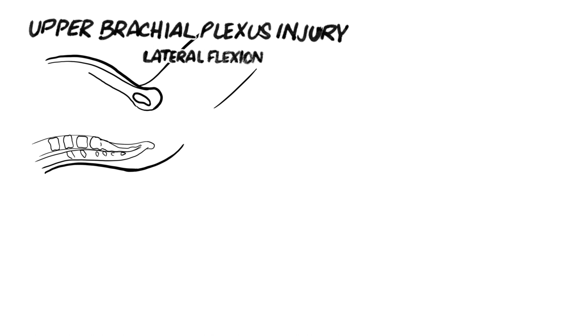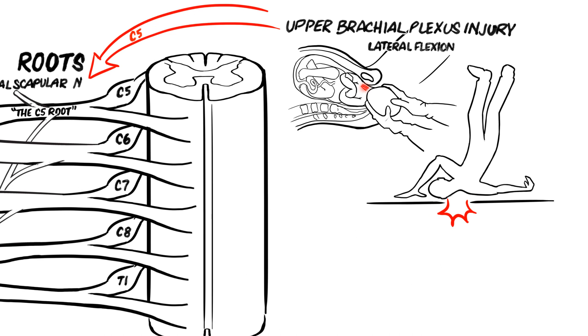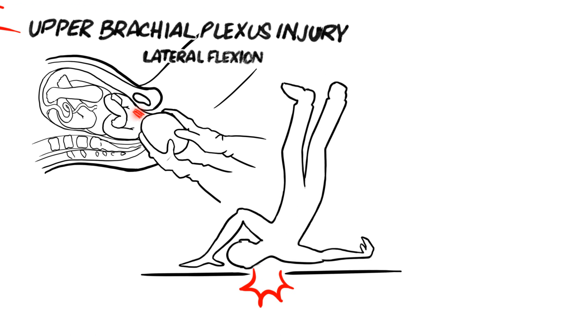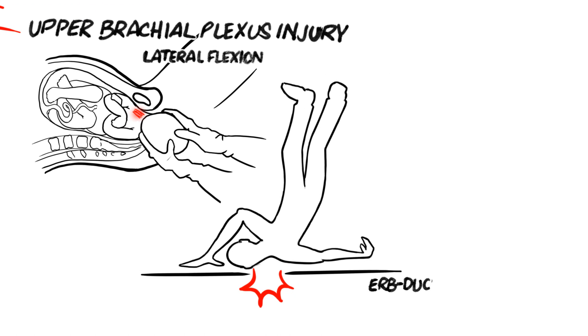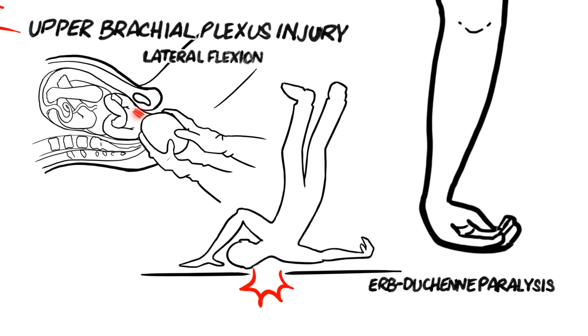Upper brachial plexus injury occurs during extreme or violent lateral flexion of the head, especially if the shoulder is simultaneously depressed. This is typified by a difficult delivery in which the baby's head is pulled out of the birth canal while his shoulders are trapped within the mother's pelvis. Upper brachial plexus injuries can also occur in adults when an oblique force pushes the head and shoulder in opposite directions, such as might occur during a fall from a motorcycle. Such injuries put enormous stretch on the C5 and C6 nerve roots and or the upper trunk itself. Damage to these structures results in characteristic deficits known as Erb-Duchenne paralysis. In Erb-Duchenne paralysis, the arm hangs limply at the side and is internally rotated. The forearm is also pronated, which slightly flexes the wrist. This produces the characteristic waiter's tip position of the arm.